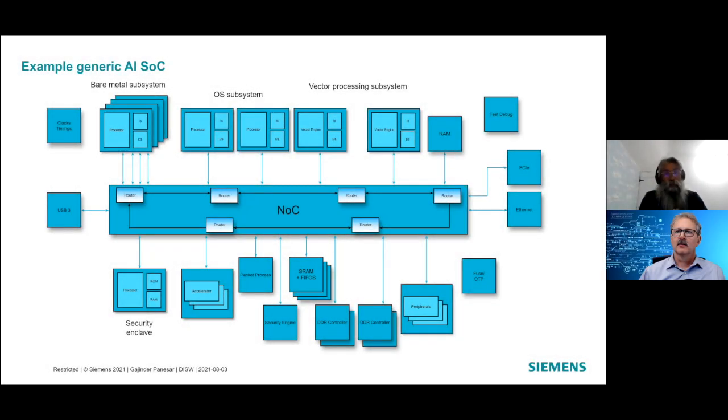What I'm going to talk through is, by way of an example, is to use a high-level block diagram of one of our customers' SOCs in the ML AI space. As you can see here, there's a bunch of different kinds of cores, some bare metal machines, some OS-capable cores, vector cores, accelerators, security enclaves, DDR controllers, and tying all this together is a NOC, a network on the chip.